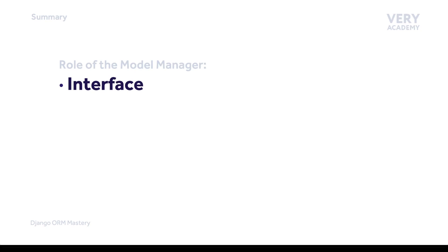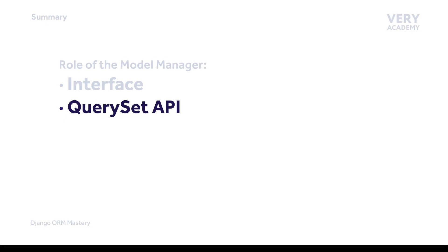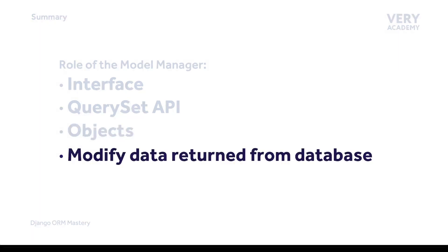In this tutorial, we explored the role of the model manager. We learned that the model manager is a doorway — or more technically, an interface — that provides access to Django ORM features, notably the Query Set API. As a Django developer, we need to use the Query Set API to query the database and return data. All Django models can have one or more model managers; each model will have a default manager called 'objects'. Model managers can be extended to provide customizations, such as modifying data returned from the database.